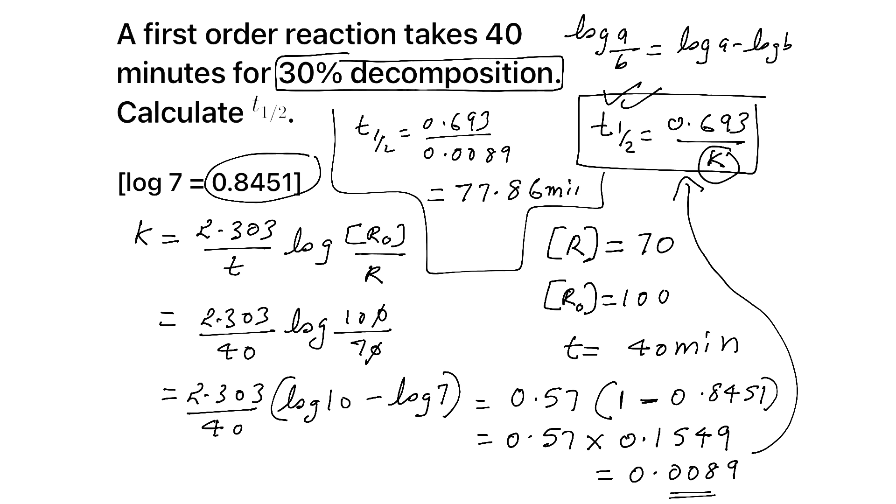See, maybe you will be getting some closer decimal answers like 77.7375. All of that is correct, okay? It depends on how many numbers we will take after decimal. 77.86. Maybe you will be getting like 77.73, 74, 75, something like that. That is also okay. Okay, that's it. So we got the half-life period.